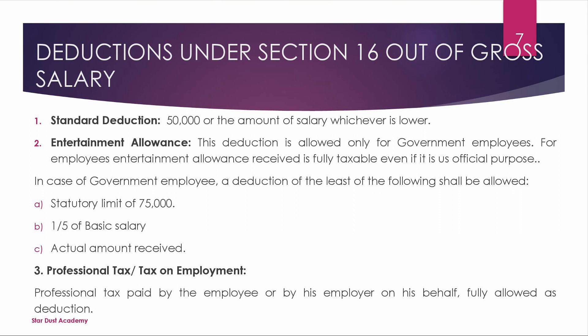Next, we will start deductions. Deductions are under Section 16. Gross salary is reduced by three deductions. One is standard deduction — standard deduction is 50,000. If deductions result in negative figures, the maximum we can allow is nil.